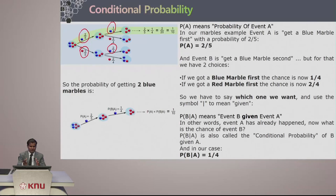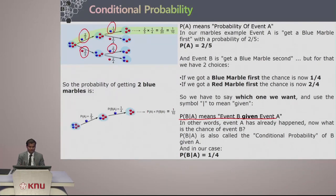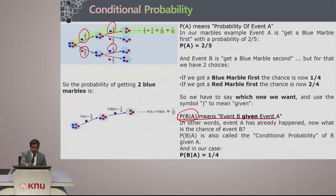We can use the symbol of a bar, which means 'given'. Probability of B given A — that is what it says. The probability of event B given event A means that event A has already occurred and we have to estimate the chances for event B. This probability of event B given A is called the conditional probability of B given A.